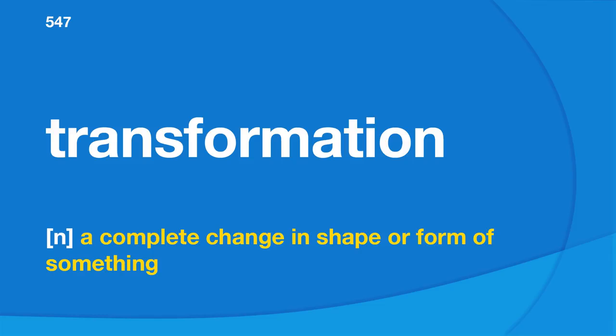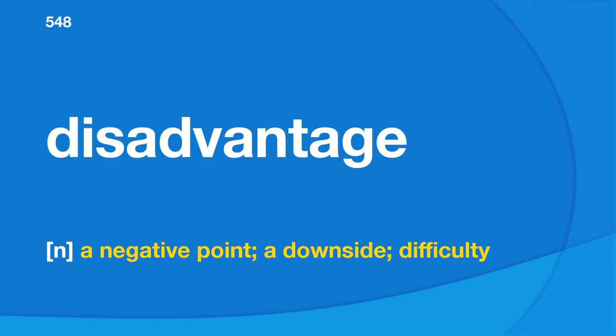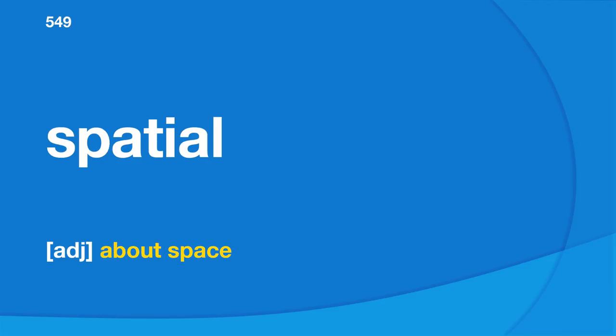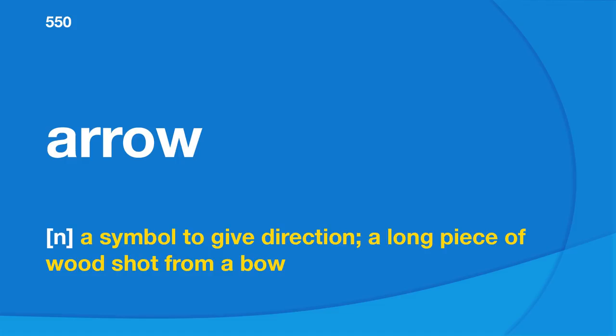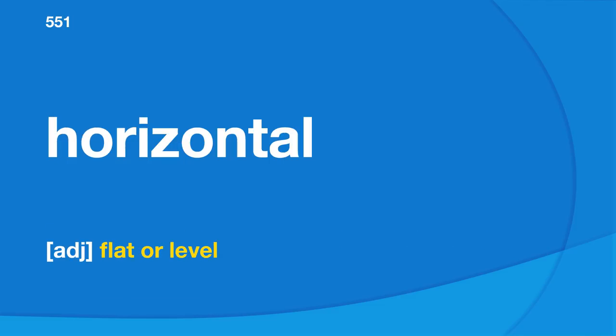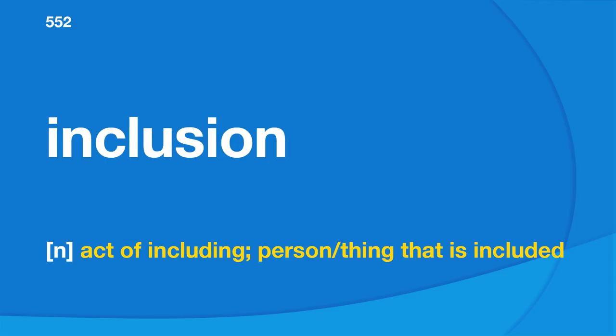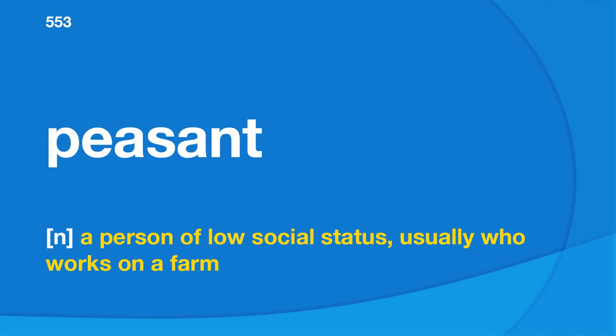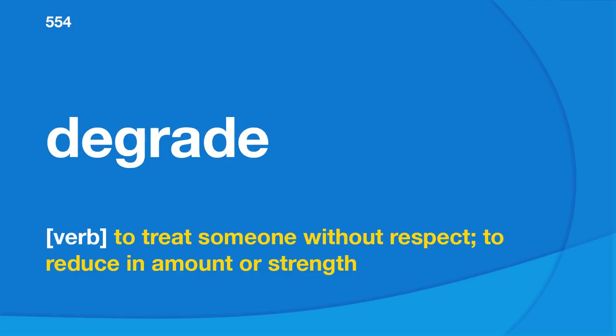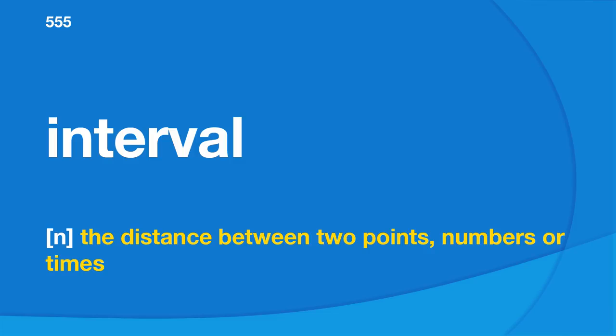Arrow: a symbol to give direction; a long piece of wood shot from a bow. Horizontal: flat or level. Inclusion: act of including; person or thing that is included. Peasant: a person of low social status, usually who works on a farm. Degrade: to treat someone without respect; to reduce in amount or strength. Interval: the distance between two points, numbers, or times. Bodily: physically, as when lifting someone.